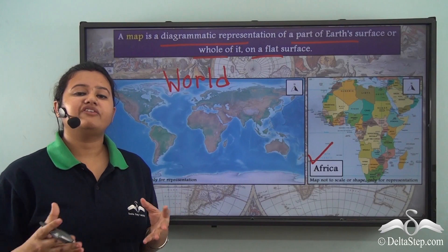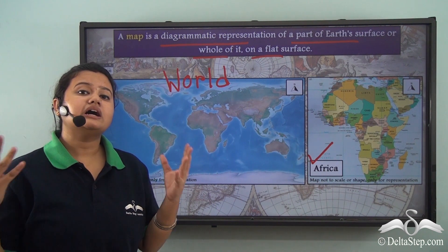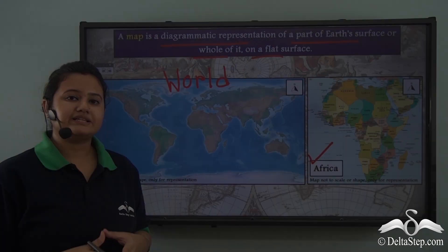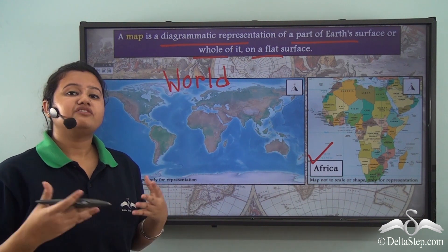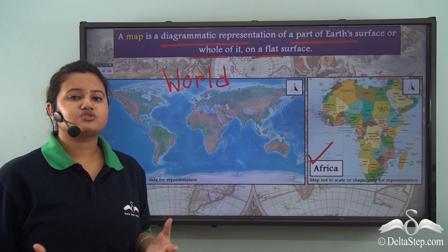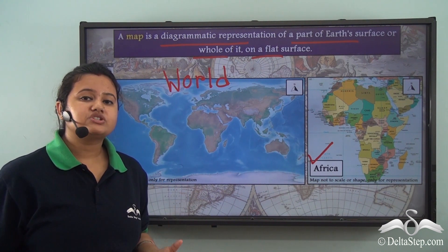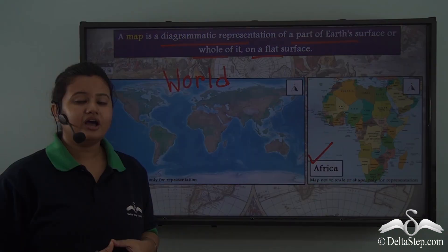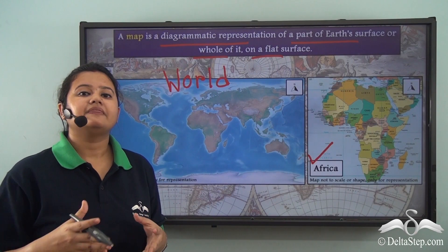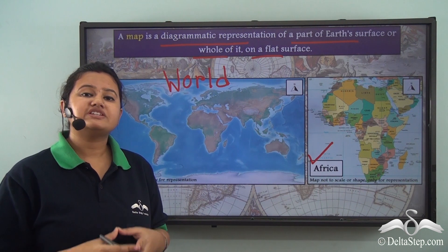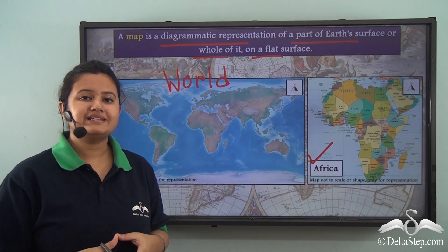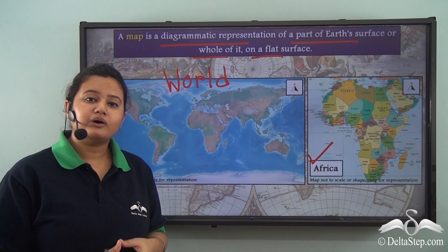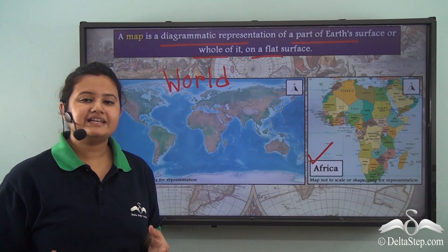Maps are very helpful and they provide a lot of information about a place. For example, maps illustrate physical features of an area like mountains, hills, valleys, rivers etc. Also there are some maps that show political divisions of a place like cities, countries, national boundaries, states etc.